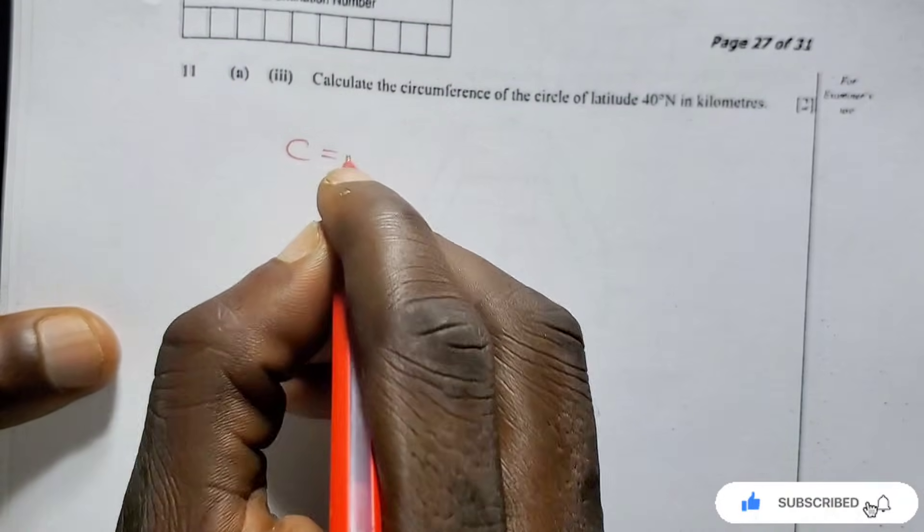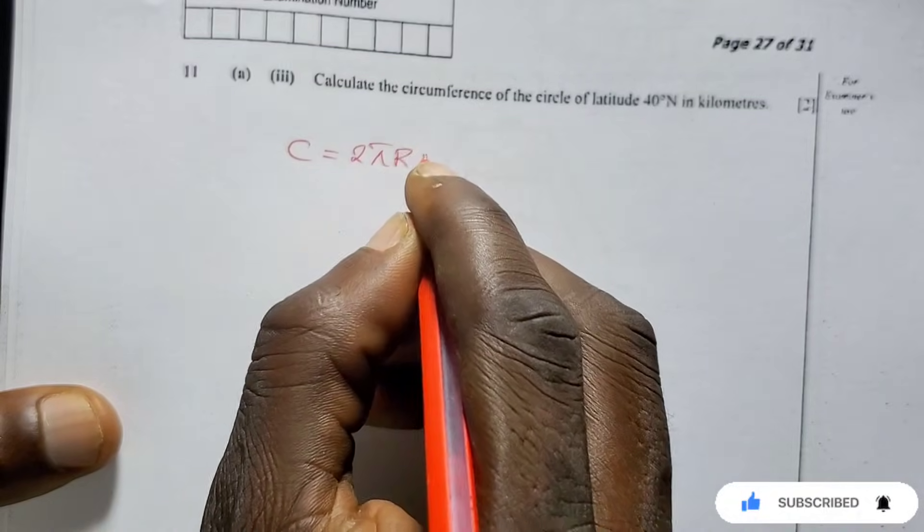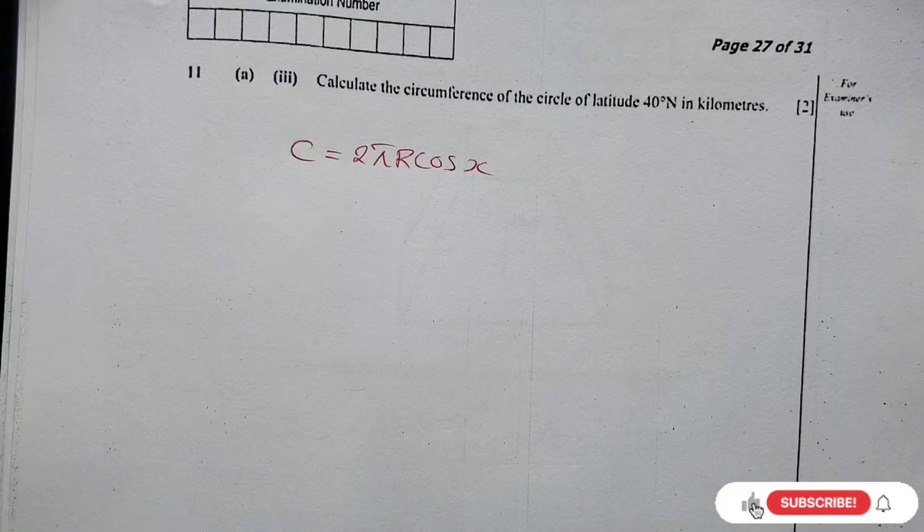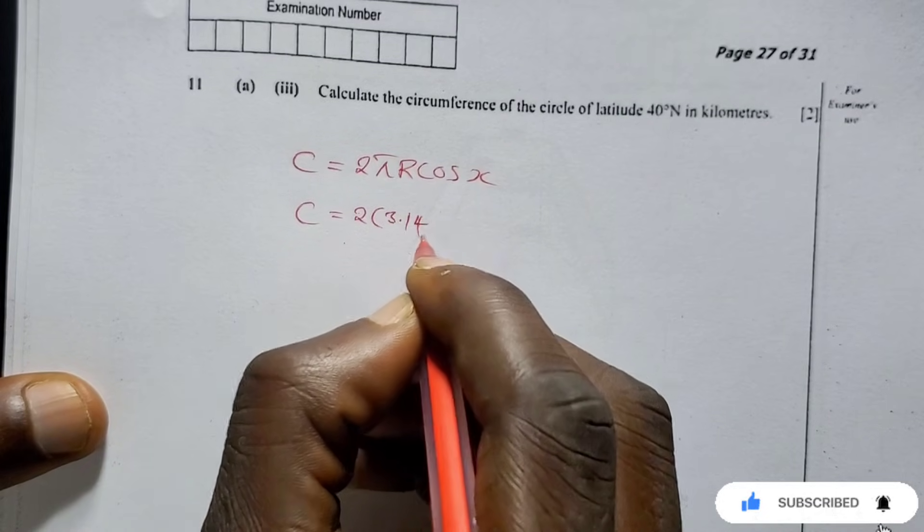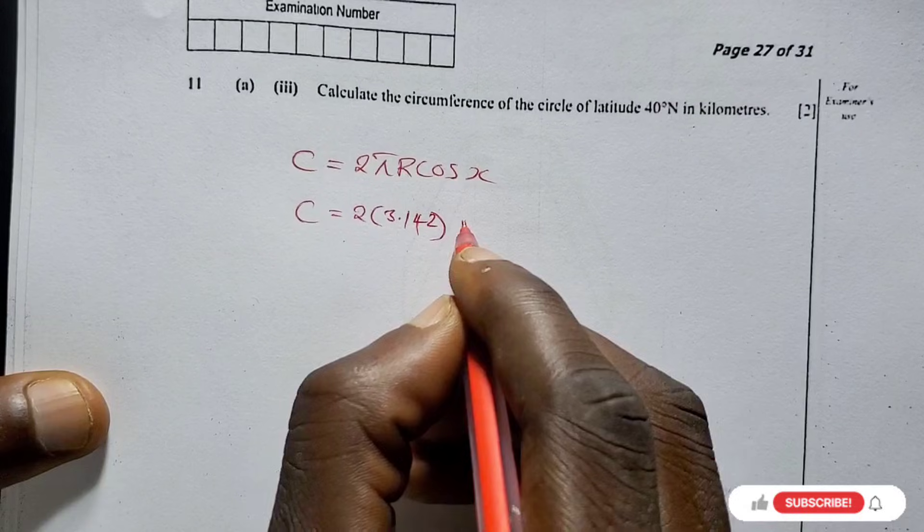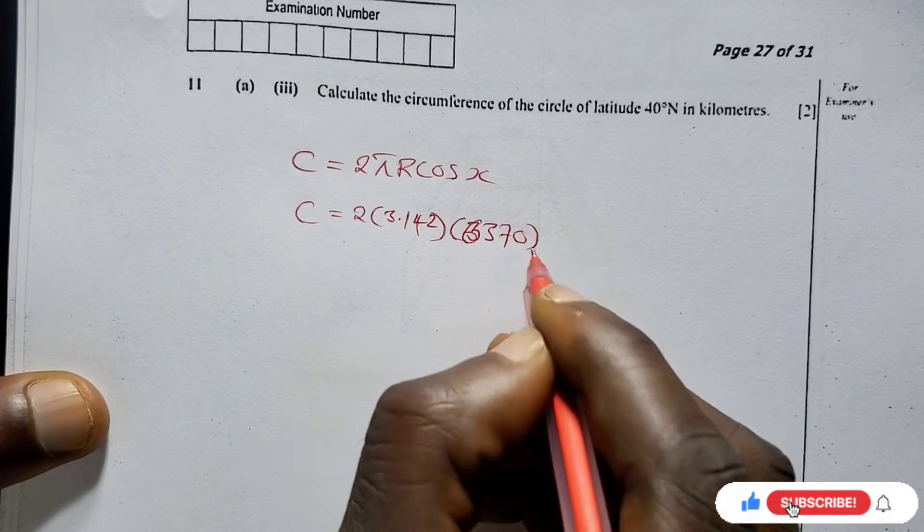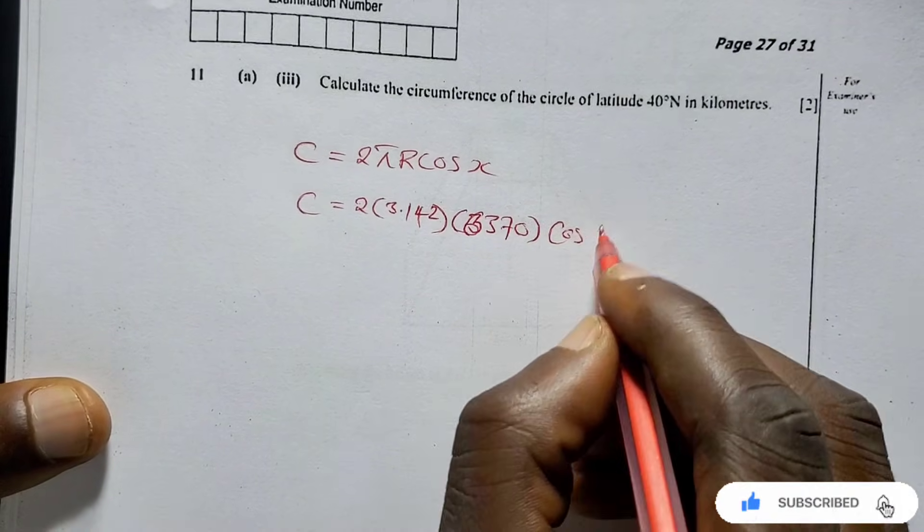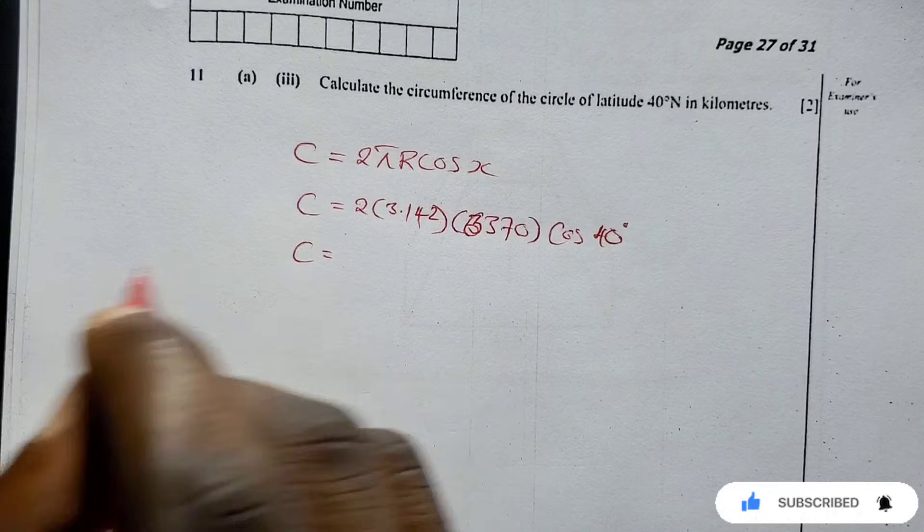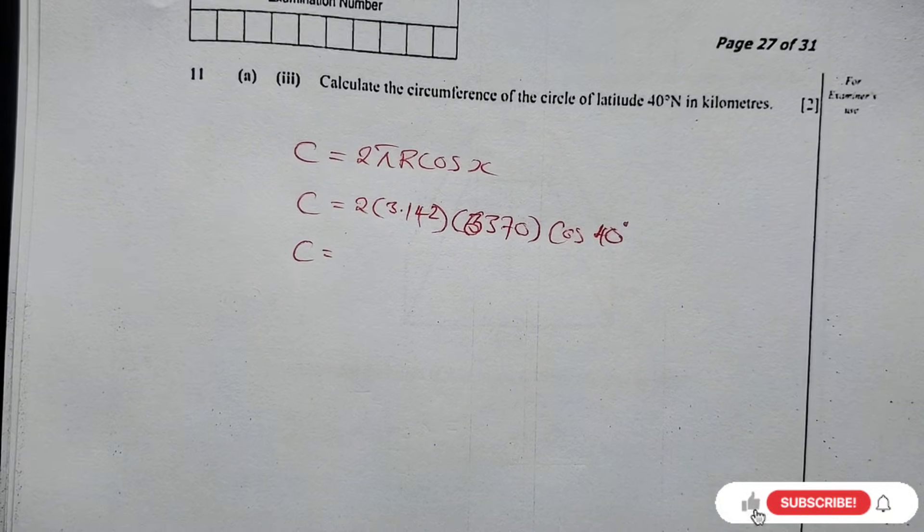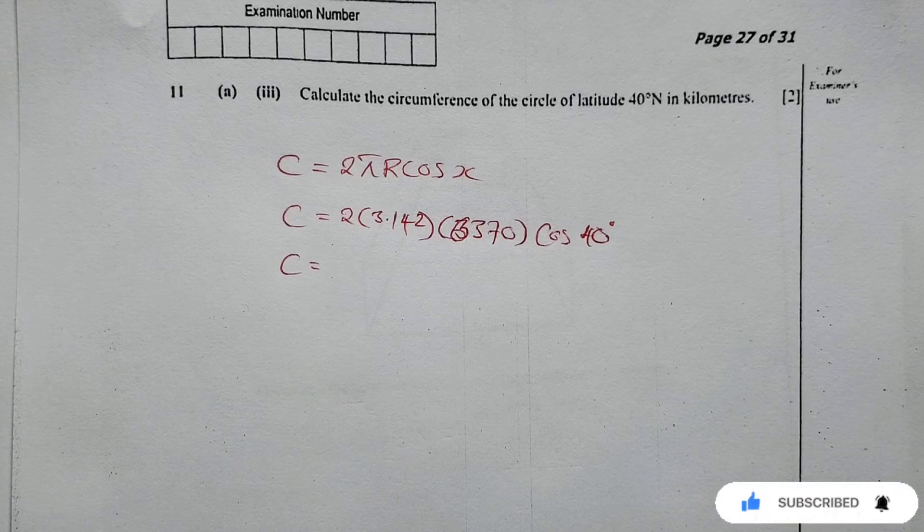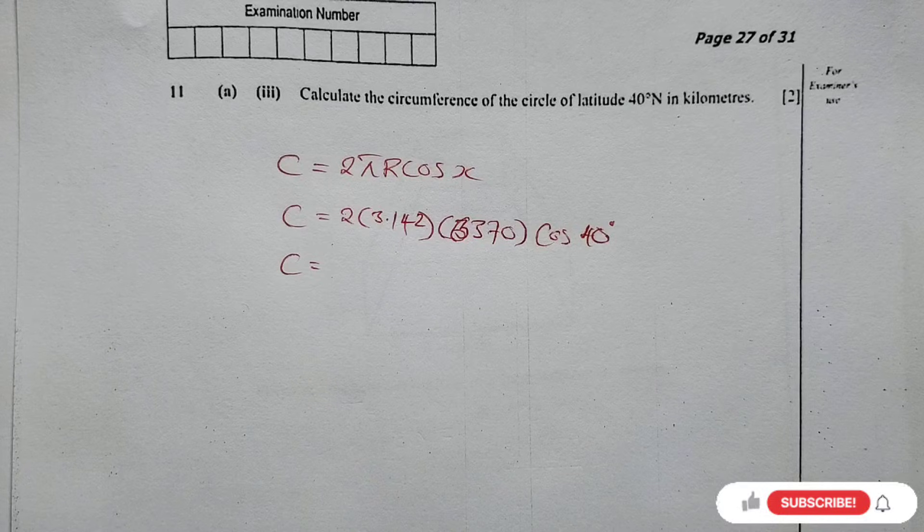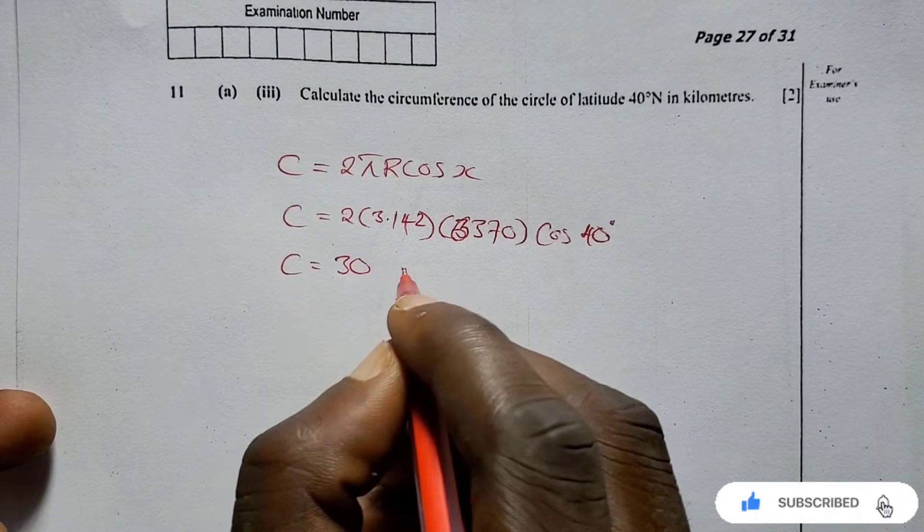So circumference equals 2, pi is 3.142, radius of the earth is 6370, cos - the x is 40 degrees. So if you calculate this, we're going to punch these into our calculator. It's 2 times 3.142 times 6370 times cos 40 degrees.